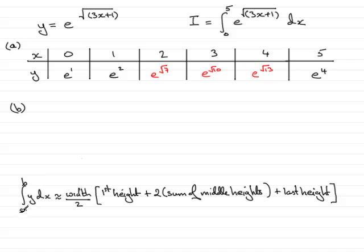If we've got an integral of y with respect to x, it's approximately the width of every interval, which in this case is 1 because it's going up in steps of 1, divided by 2. So I is approximately the width of the interval, which was 1, divided by 2.